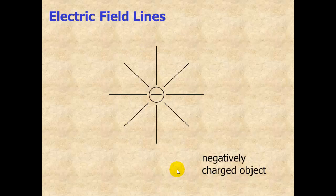If we have a negatively charged object, and we bring a positive test charge into the area surrounding it, it's going to feel an inward force of attraction. So we say that all these field lines are going to be pointing inward.